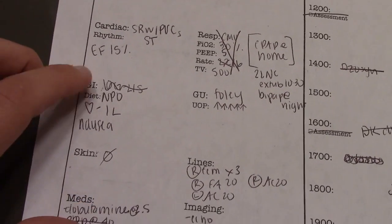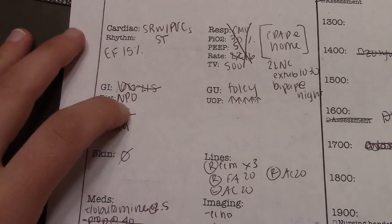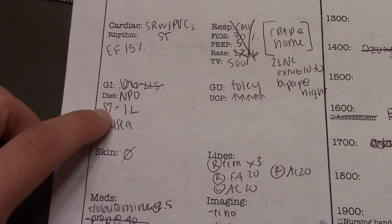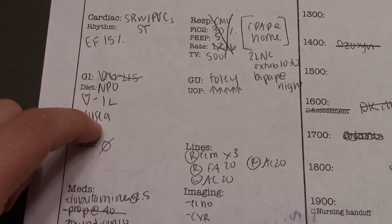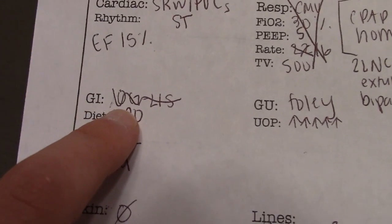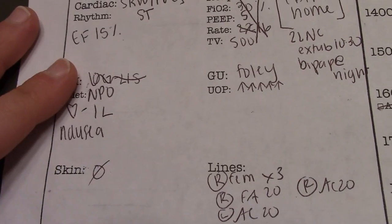GI-wise, I have their diet. A lot of patients in the ICU are NPO. This patient was NPO and then got extubated, so they were on a cardiac diet with a one liter fluid restriction. They had some nausea. This was OG tube, low intermittent suction, and obviously when they got extubated, that was taken out.